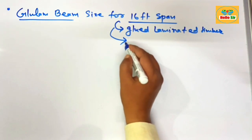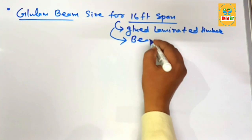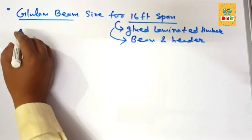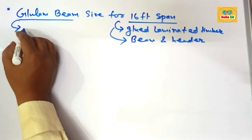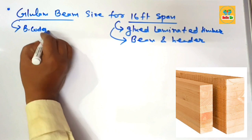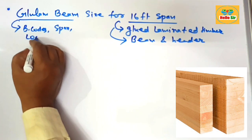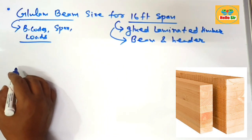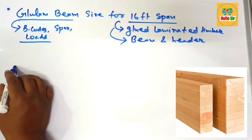It is an engineered wood product used as a beam and header in building construction. The correct size of a glulam beam depends on many factors like building code, span length, specific requirements, and load conditions. Here we calculate glulam beam size according to the thumb rule.